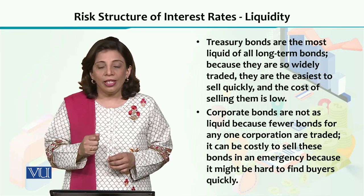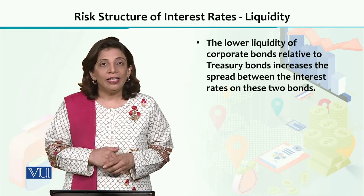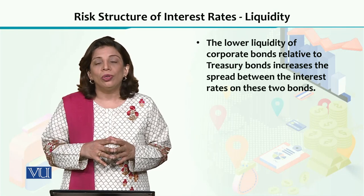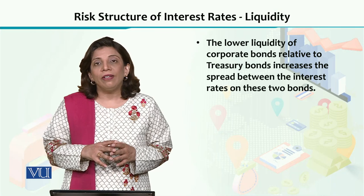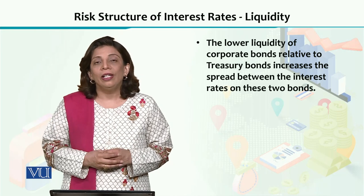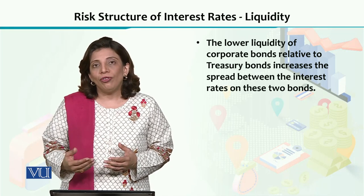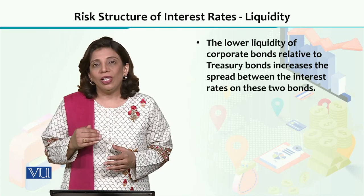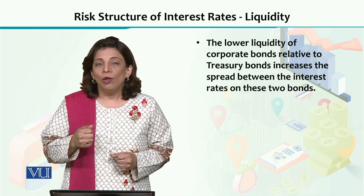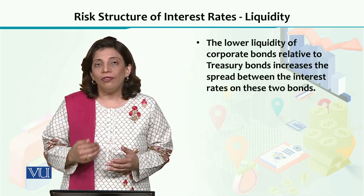So now we understand that the corporate bond's liquidity aspect makes it less desirable. And because it is less desirable due to low liquidity, the price of corporate bonds becomes relatively low, and they have to offer more interest rates. That's why, because of the liquidity perspective — treasury bonds are easily converted into cash, they are more desirable, their demand will be high, their price will be high, and their rate of return or interest rate will be low.